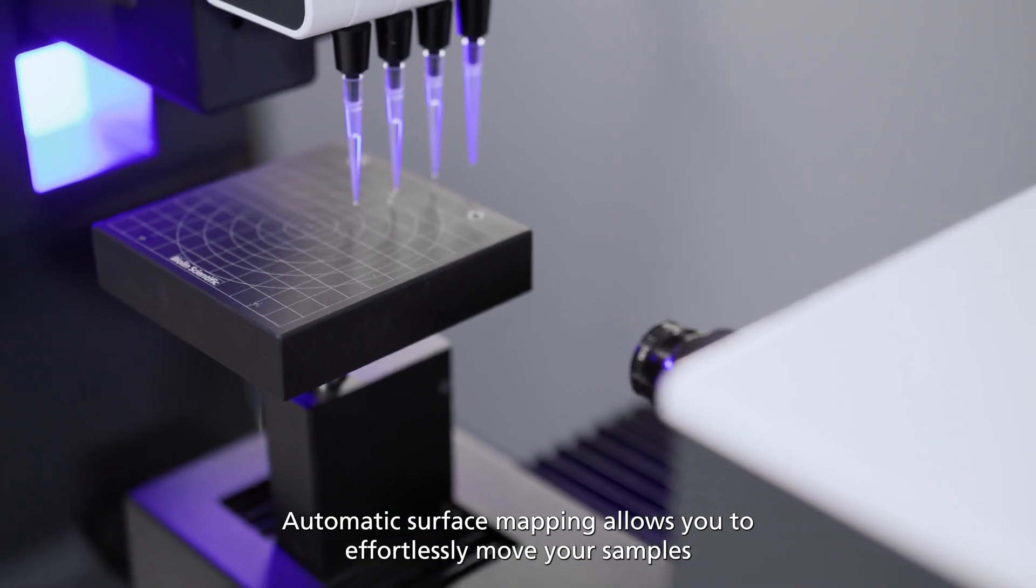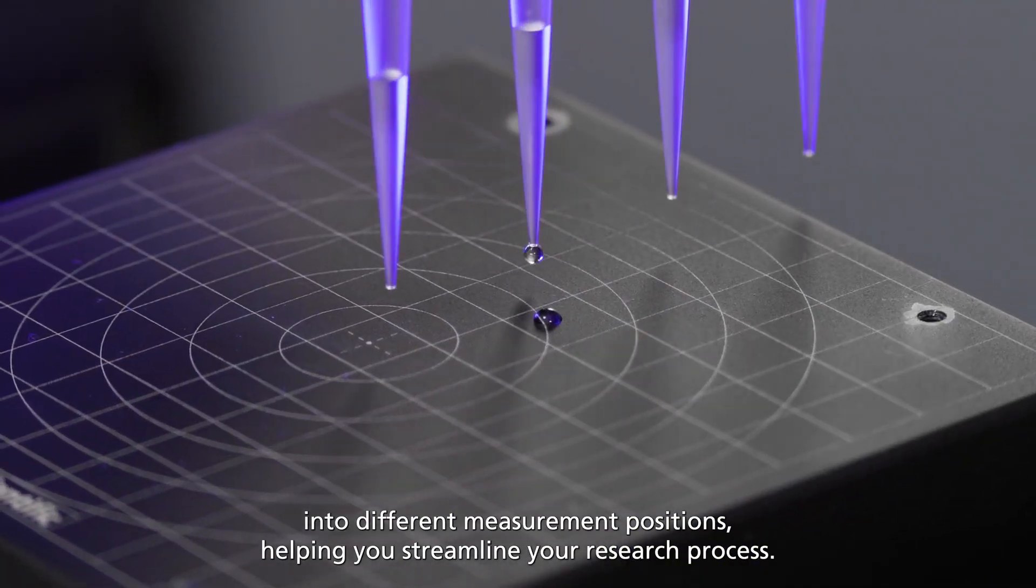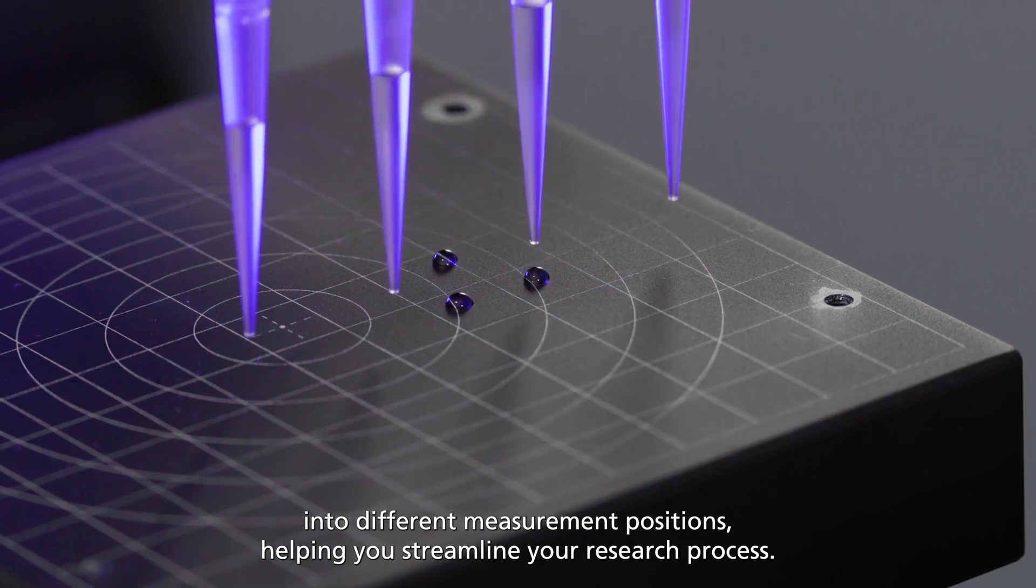Automatic surface mapping allows you to effortlessly move your samples into different measurement positions, helping you streamline your research process.